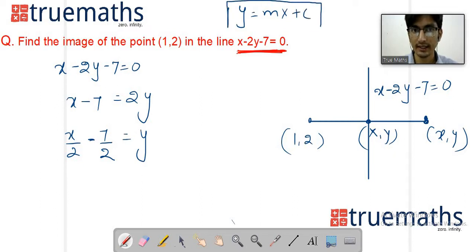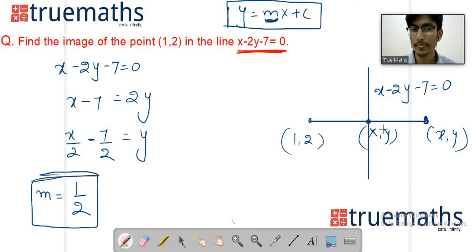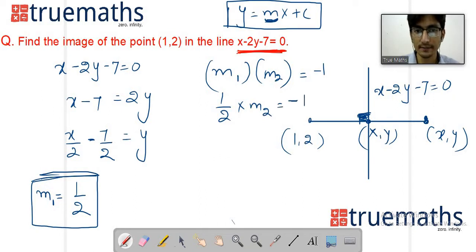If we compare y = mx + c, so this means this is our slope. If we compare it, the value is 1/2. So this is our slope 1/2. Now the two lines are perpendicular, so m1 into m2 = -1. m1 is 1/2, so cross multiply to find m2.